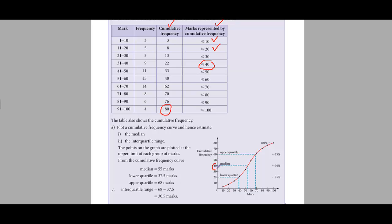80 is the total on the y-axis, so 40 — which is half of 80 — represents the 50th percentile. Come across from 40 on the y-axis, hit the graph, and check the value on the x-axis. It is just more than 50 — about 55. So 55 is our median. This is how we calculate the median from the graph.